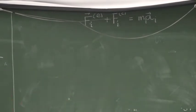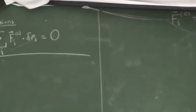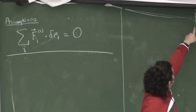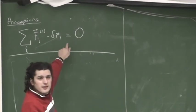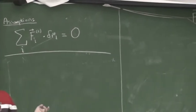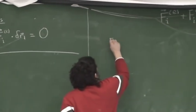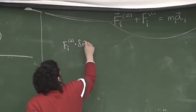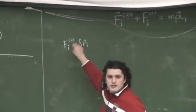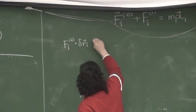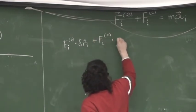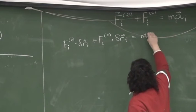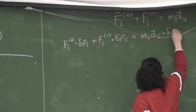Right, so, let's write it now, let's go. So we'll take this equation, and we'll dot product it with the virtual displacement, and we'll sum over i, and we'll see what happens. Right? So let's do that. Fi external dot δri, the virtual displacement, the i-th particle, dotted with everything. Fi constraint δri is equal to mi ai dot δri. All I've done is I've dotted everything up here with δri. If this is true, then this is true.